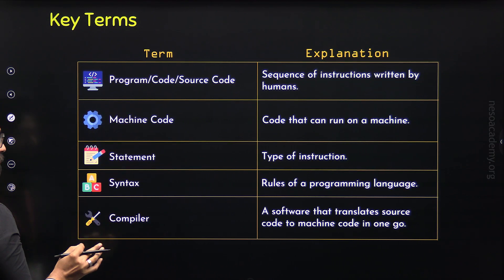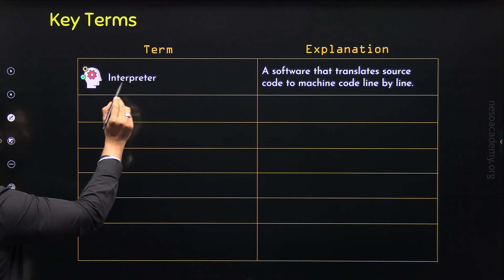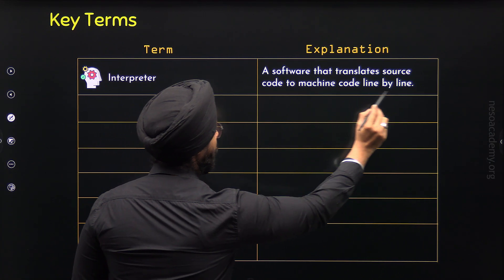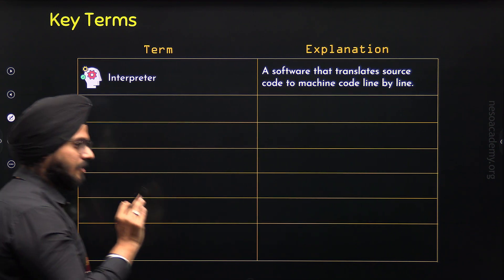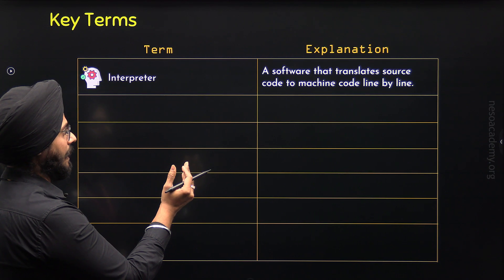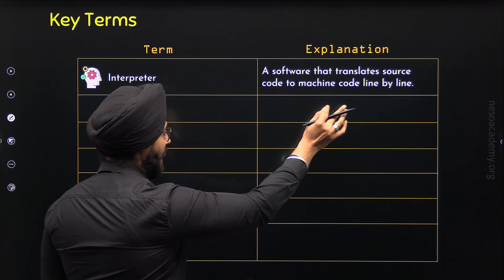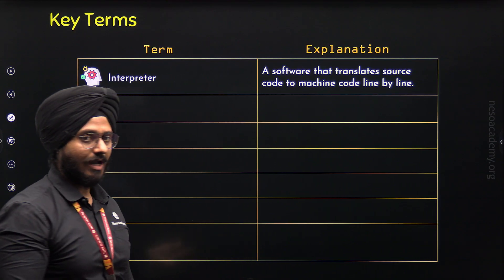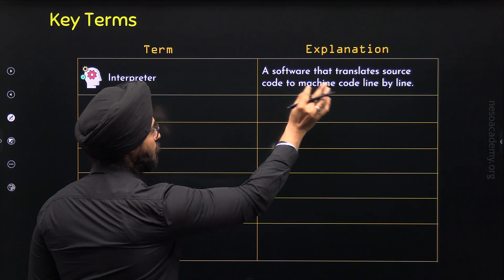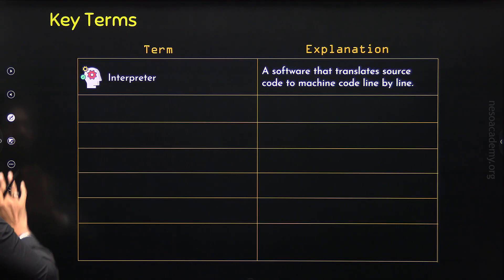Now we have learned five terms. Let's move to the sixth term: Interpreter. An Interpreter is a software that translates source code to machine code line by line. It is also a translator just like a Compiler, but it works differently — it does not take the entire source code at once. Instead, it takes one line of source code at a time and converts it to machine code.